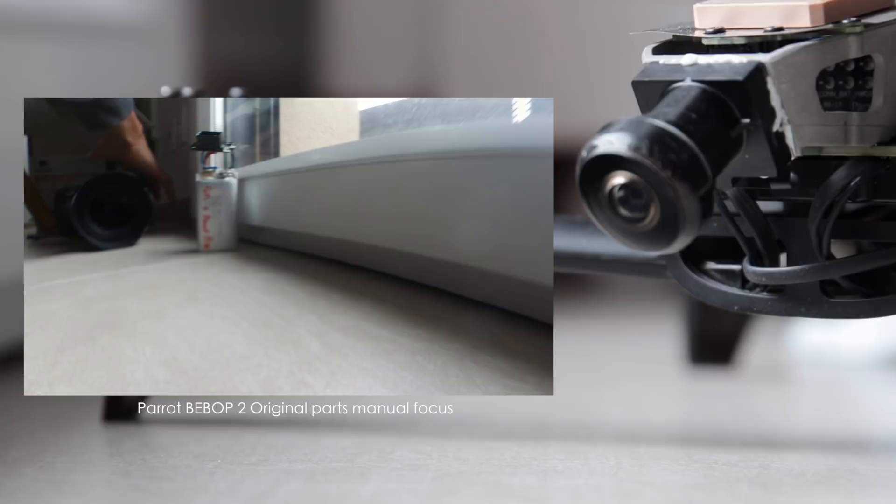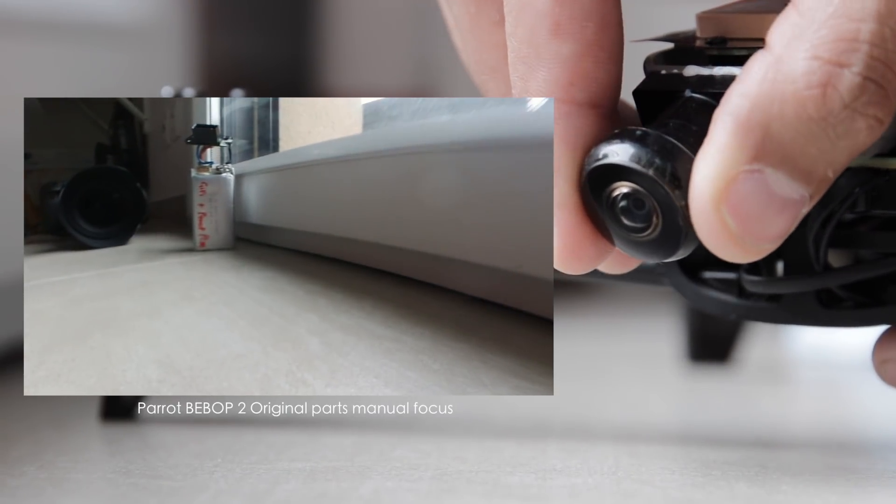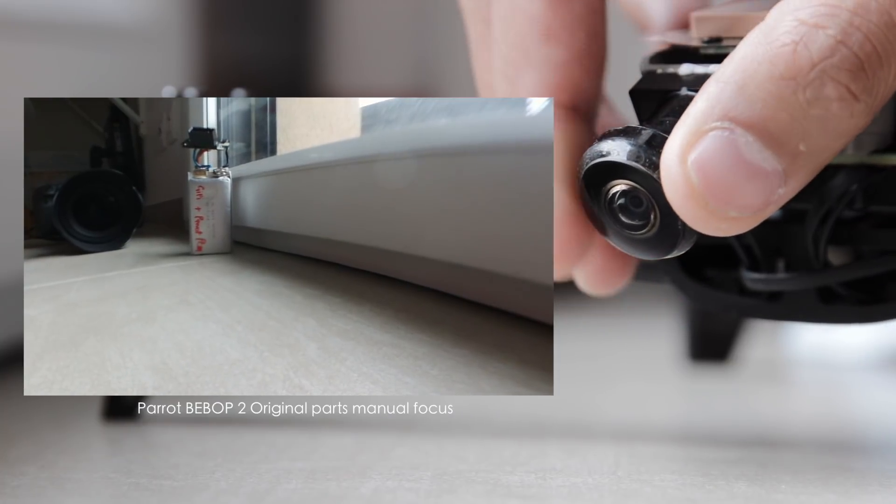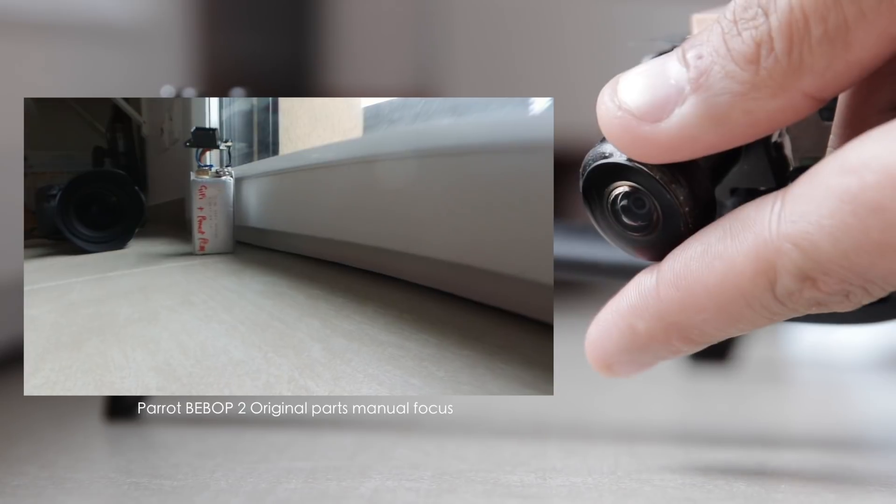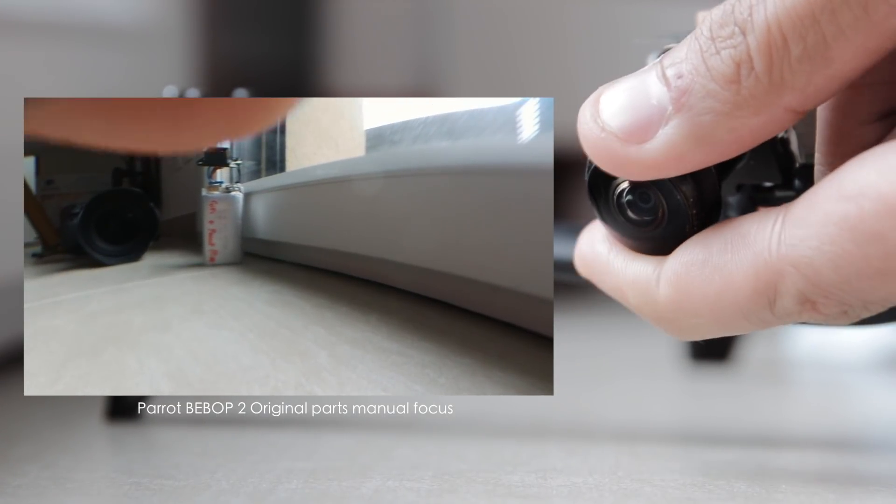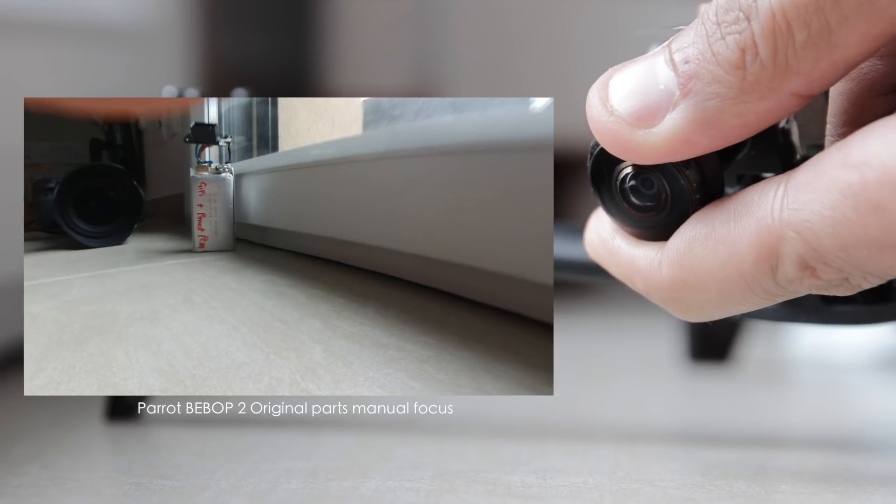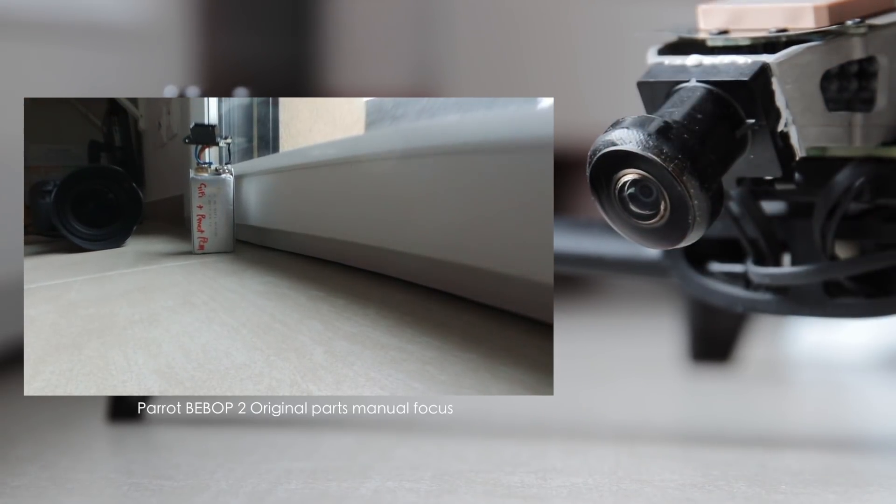All I have to do is just rotate the front element and position it in or out. But what I did was I offset the element. So as I rotate it, the portion of the element would go closer and then move further away as you turn it. So that would either focus or defocus.